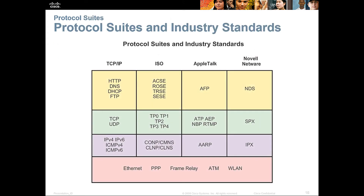Looking at the TCP/IP model layers: upper-layer protocols include HTTP, DNS, DHCP, and FTP. Layers 1 and 2 make up Ethernet, PPP, Frame Relay, ATM, and Wireless LANs. Layer 3 covers IP and ICMP. Layer 4 covers TCP and UDP. UDP is the connectionless-oriented version of TCP — best effort, not guaranteed delivery.